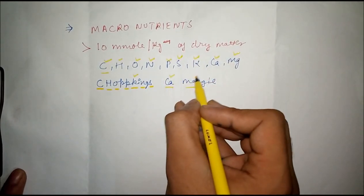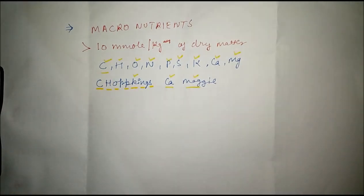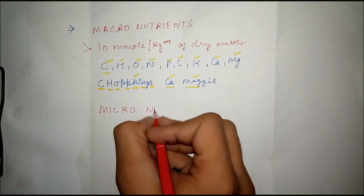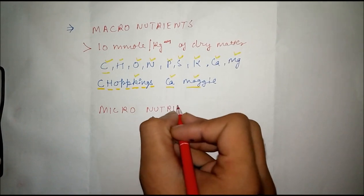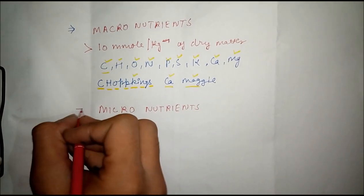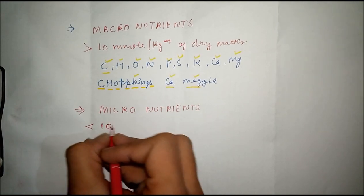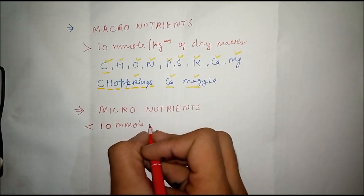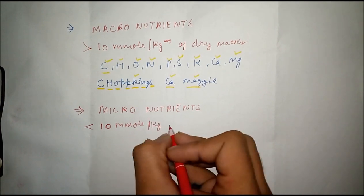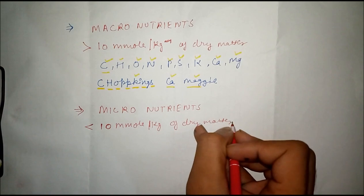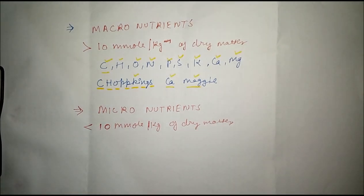You can remember it as 'Chopkins Ca Maggi'. And for micronutrients, these are the nutrients that are present in less than 10 mmol per kg of dry matter.